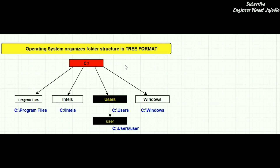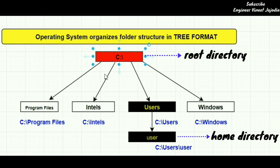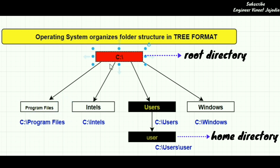What is absolute path? Every file and directory has an absolute path which is based upon the root directory. As shown in the diagram, this is the root directory and this is the child directory. Now, if you want to reach the child directory, what you have to do is, with the help of the root directory, just add the name of the child directory in front of the backslash.